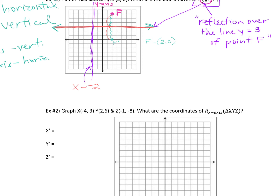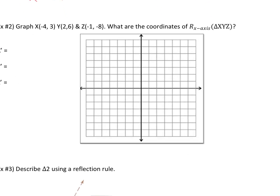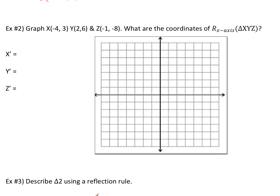Here's a wonderful example of what you'll have to do on a test. I'll give you a triangle and you have to draw it, then graph the reflection. Let's plot the triangle first. For negative 4, 3: go left 4 and up 3 — that's point X. Point Y is at (2, 6): go 2 to the right and 6 up. And point Z is at negative 1, negative 8: that's 1 to the left and 8 down. If you fall off the graph, just add lines. So this is Z, and our triangle looks like this.